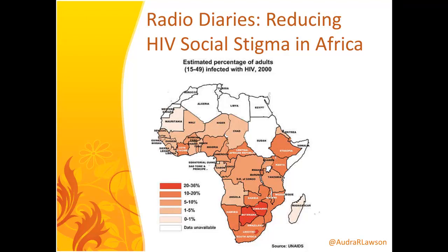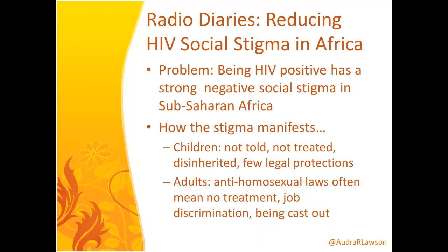I want to borrow from one of my old professor's campaigns — the Radio Diaries. Its purpose was to reduce HIV social stigma in Africa. When he was doing this research in the early 2000s, the estimated percentage of adults with HIV ranged from 15% to 49% of the whole adult population in these countries. To say that HIV is a major problem in sub-Saharan Africa is a bit of an understatement.